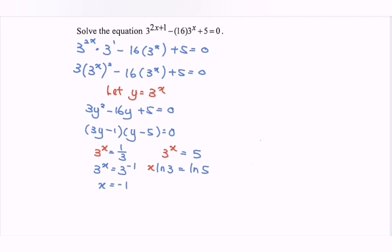The ln 3 and ln 5 are just constants. Finally, we have x equals ln 5 over ln 3.